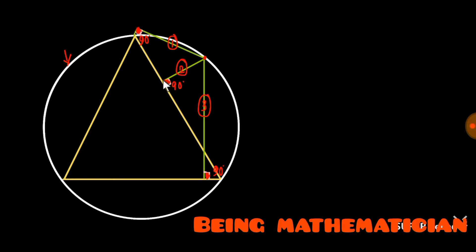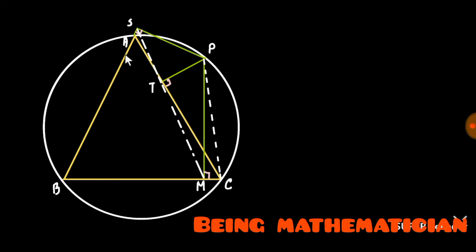Now we join these points and name the whole figure. P is the arbitrary point on the circumference of the circle, and PS, PT, and PM are the perpendiculars to the sides of the triangle ABC — to AB, AC, and BC respectively.